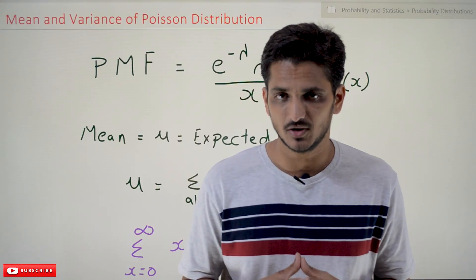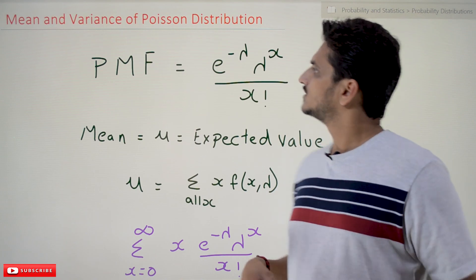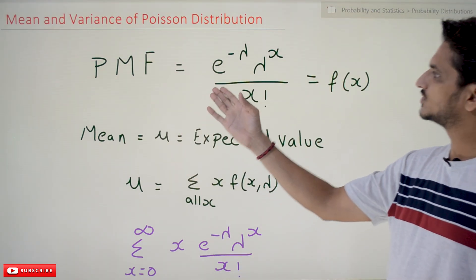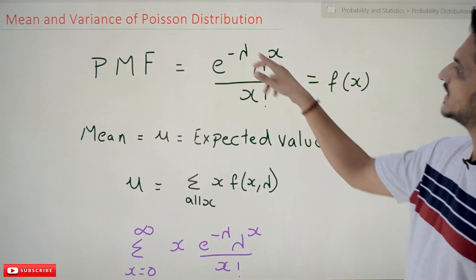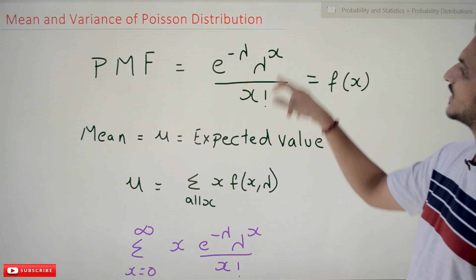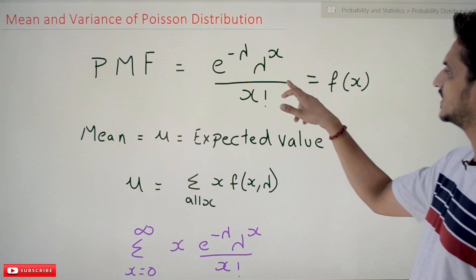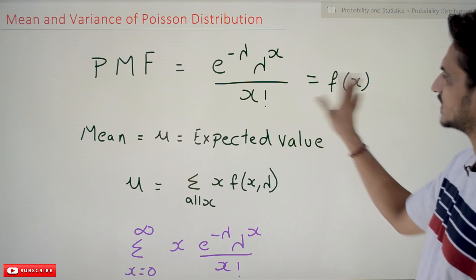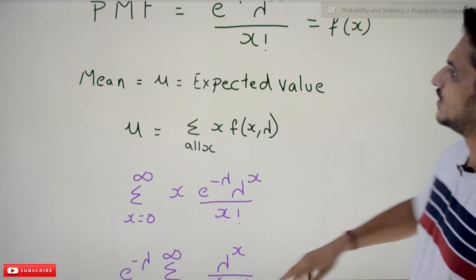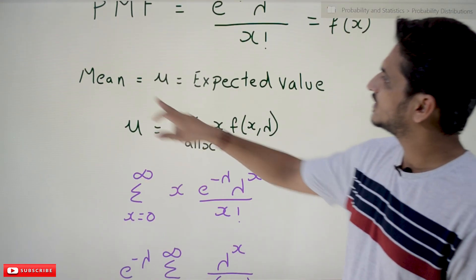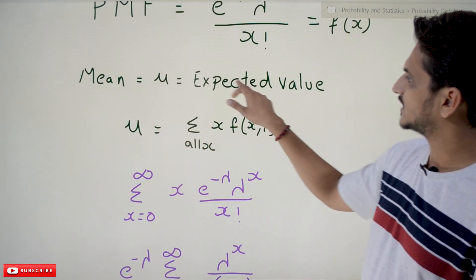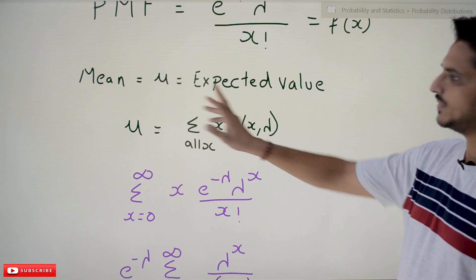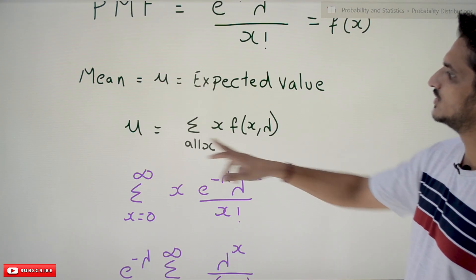Coming to today's class: the probability mass function of Poisson's distribution is e^(−λ) · λ^x / x!, and that is given as f(x). We call this function f(x). The mean, mu, or expected value — everything refers to the same thing.